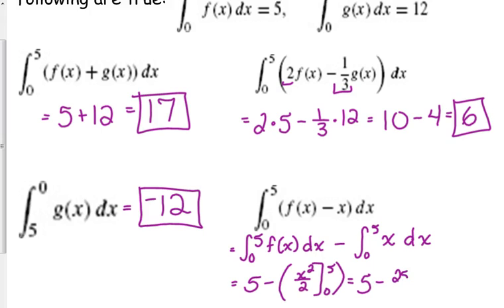So we've got 5 squared, which is 25, which is not evenly divisible by 2. And then we're subtracting what we get when we plug in 0. And when you square 0 and divide it by 2, you still get 0.